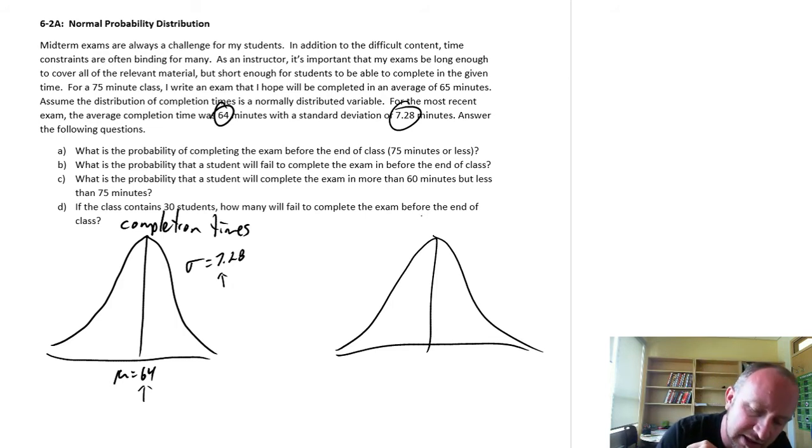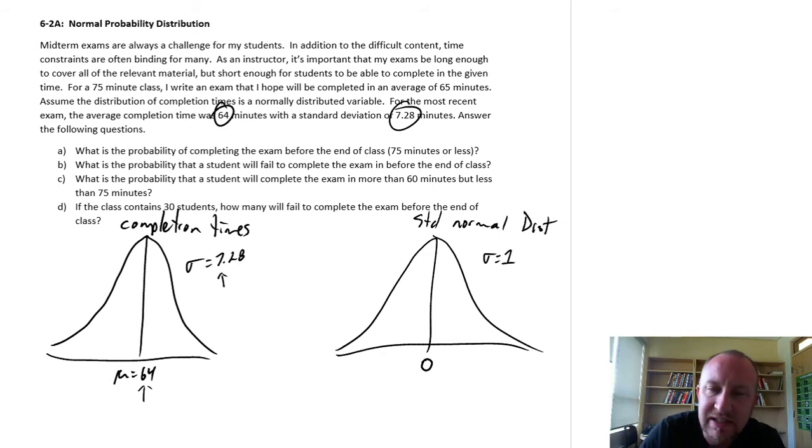So this standard normal distribution is defined by the distribution that has a mean of zero and a standard deviation of one. This distribution, we know all there is to know about this distribution. Well, I know all I need to know about it anyways. From here we can get all of our probabilities that we'll ever be interested in when dealing with these types of problems.